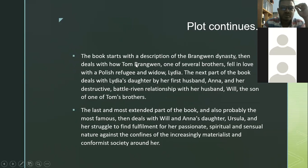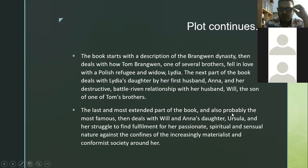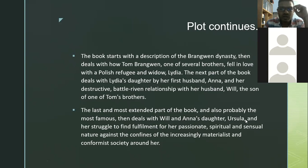The book starts with a description of the Brangwen dynasty, then deals with how Tom Brangwen — one of several brothers — fell in love with a Polish refugee and widow, Lydia. The next part deals with Lydia's daughter by her first husband, Anna, and her destructive, battle-riven relationship with her husband Will, the son of one of Tom's brothers. The last and most extended part of the book deals with Will and Anna's daughter Ursula — the third generation. So the first generation is Tom Brangwen and Lydia, the second generation is Will Brangwen and Anna, and the third generation is Ursula and Skrebensky.